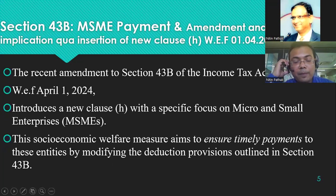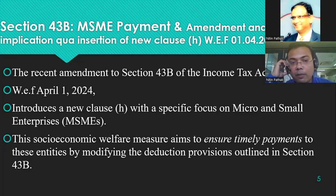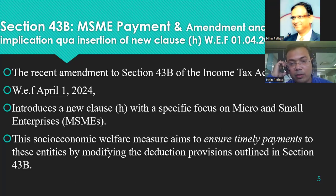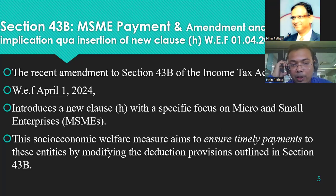Section 43B MSME payment amendment will be applicable from 1st April 2024. This amendment was made in Union Budget 2023. The introduction of new Section 43B(h) focuses on micro and small enterprises — not medium enterprises. This is a socioeconomic welfare measure aimed to ensure timely payment to these entities by modifying deduction provisions outlined in the section.